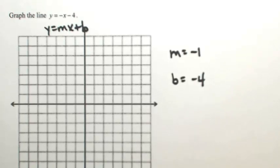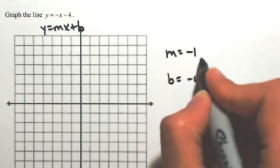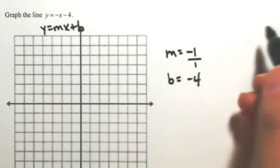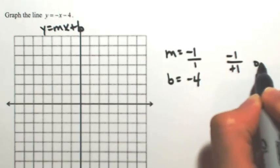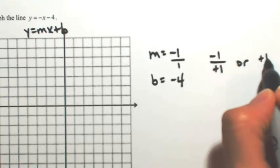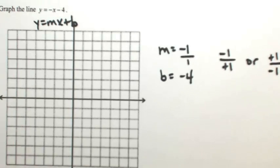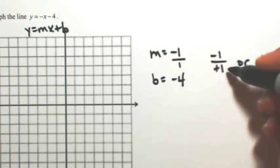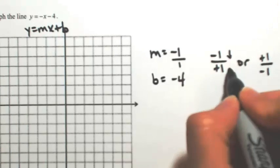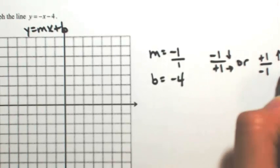Once again, we can treat the slope as a fraction essentially. So this negative one is over one. I can either view this as negative one over positive one, or I can view this as positive one over negative one. Either way, when you divide them, you're going to get negative one. If I use the first one, the top is y, bottom is x, so I would go down and right, or up and left.